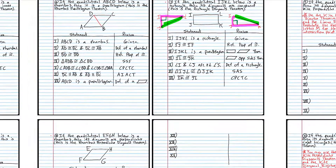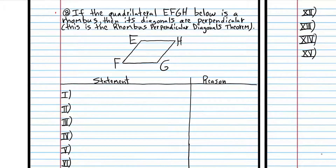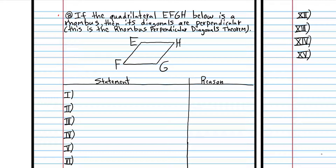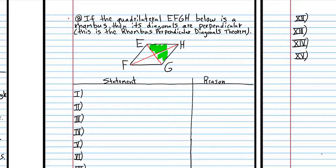Let's go to number eight — we'll do it together, and you can do a similar problem for number nine. If the quadrilateral EFGH below is a rhombus, then its diagonals are perpendicular. This is the rhombus perpendicular diagonals theorem. We're going to show these diagonals are perpendicular by choosing two of these triangles — this one and this one — and showing they're congruent. All four of those triangles are actually congruent. Then we can say corresponding parts are congruent, meaning this angle is congruent to this angle. But those two angles also form a linear pair, so we'll have to use the linear pair postulate.